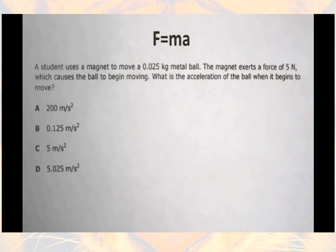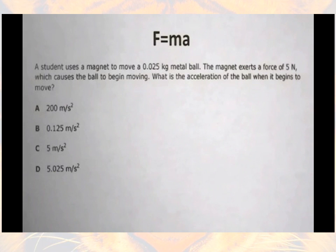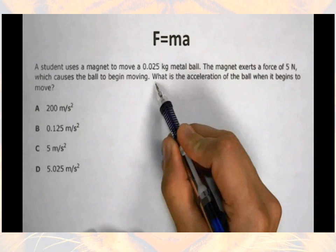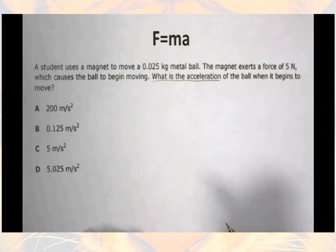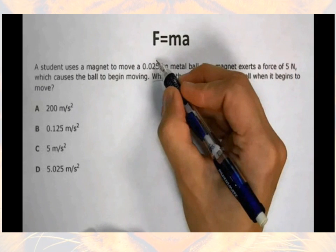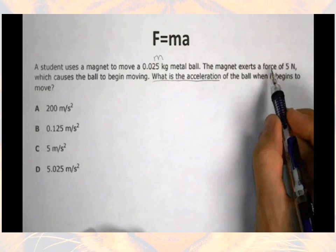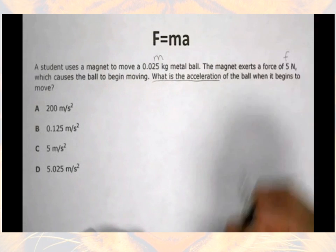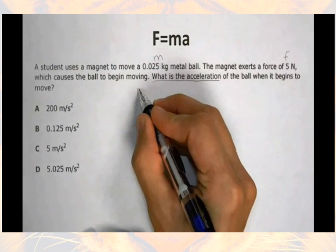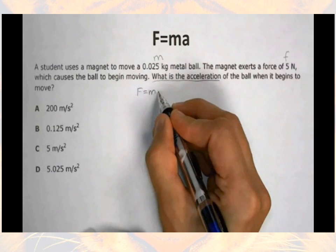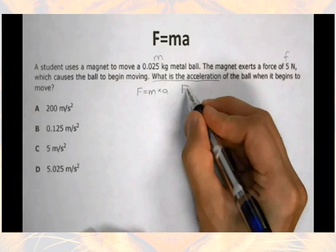A student uses a magnet to move a 0.025 kilogram metal ball. The magnet exerts a force of 5 newtons, which causes the ball to begin moving. What is the acceleration of the ball when it begins to move? With a problem like this, always think about what you need to find — this problem flat out tells me: find the acceleration. Things the problem gave me: the mass, 0.025 kilograms, and the force of 5 newtons. So I begin with my equation: force equals mass times acceleration, or F equals MA.